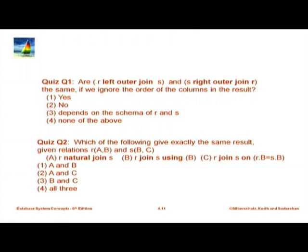This is a good time for a quiz. The first question: is R left outer join S the same as S right outer join R, if we ignore the order of columns? In SQL, the output of any join has columns of the left relation first, followed by columns of the right relation, so flipping R and S gives different column order. However, if we ignore column order, in both cases we are preserving tuples from R — and S tuples without a match are dropped — so they are actually equivalent and the answer is yes.